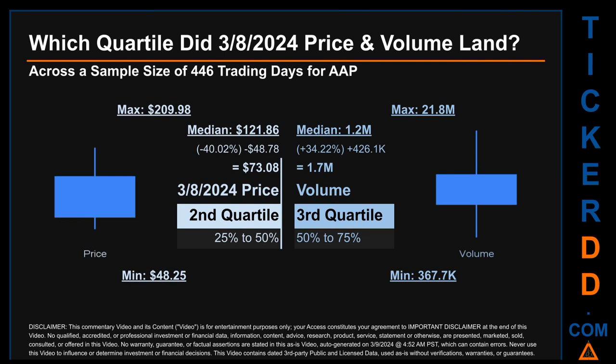Hello, my name is Maria. Which quartile did the 8th of March 2024 price and volume land in? Across a sample size of 446 trading days, the maximum end-of-day price for AAP was $209.98, while the minimum was $48.25. Within that range, the 8th of March 2024 price of $73.08 landed within the second quartile, putting it within the 25% to 50% range of all sampled end-of-day prices.